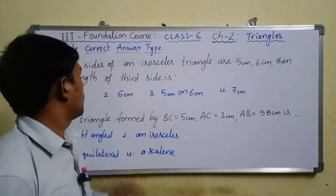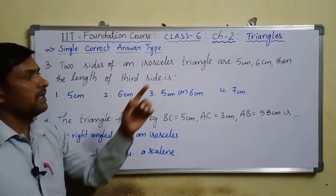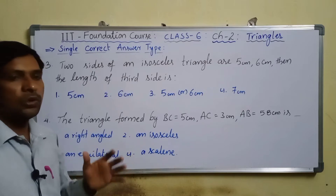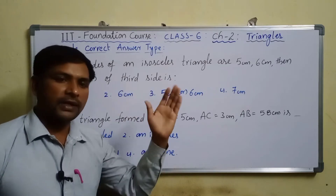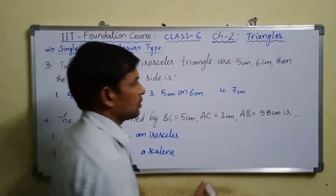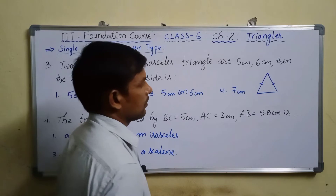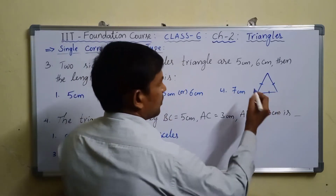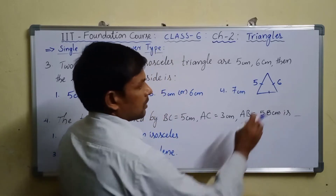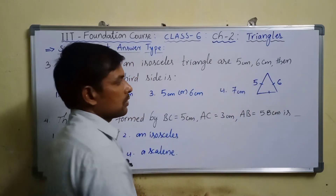Question number three: two sides of an isosceles triangle are 5 cm and 6 cm. What is the length of the third side? An isosceles triangle means any two sides must be equal. So if one side is 5 cm and another is 6 cm, the third side may be either 5 cm or 6 cm.